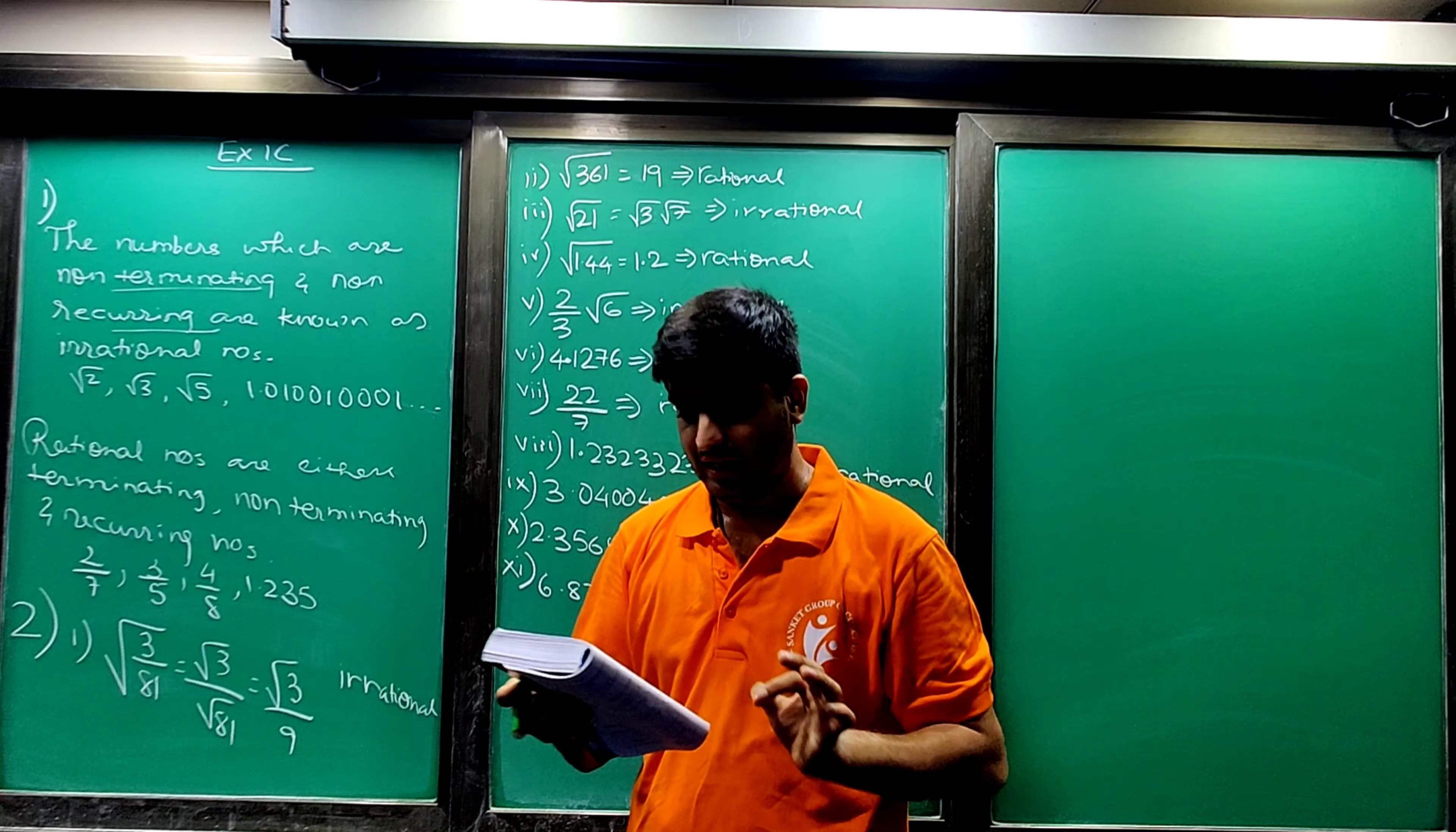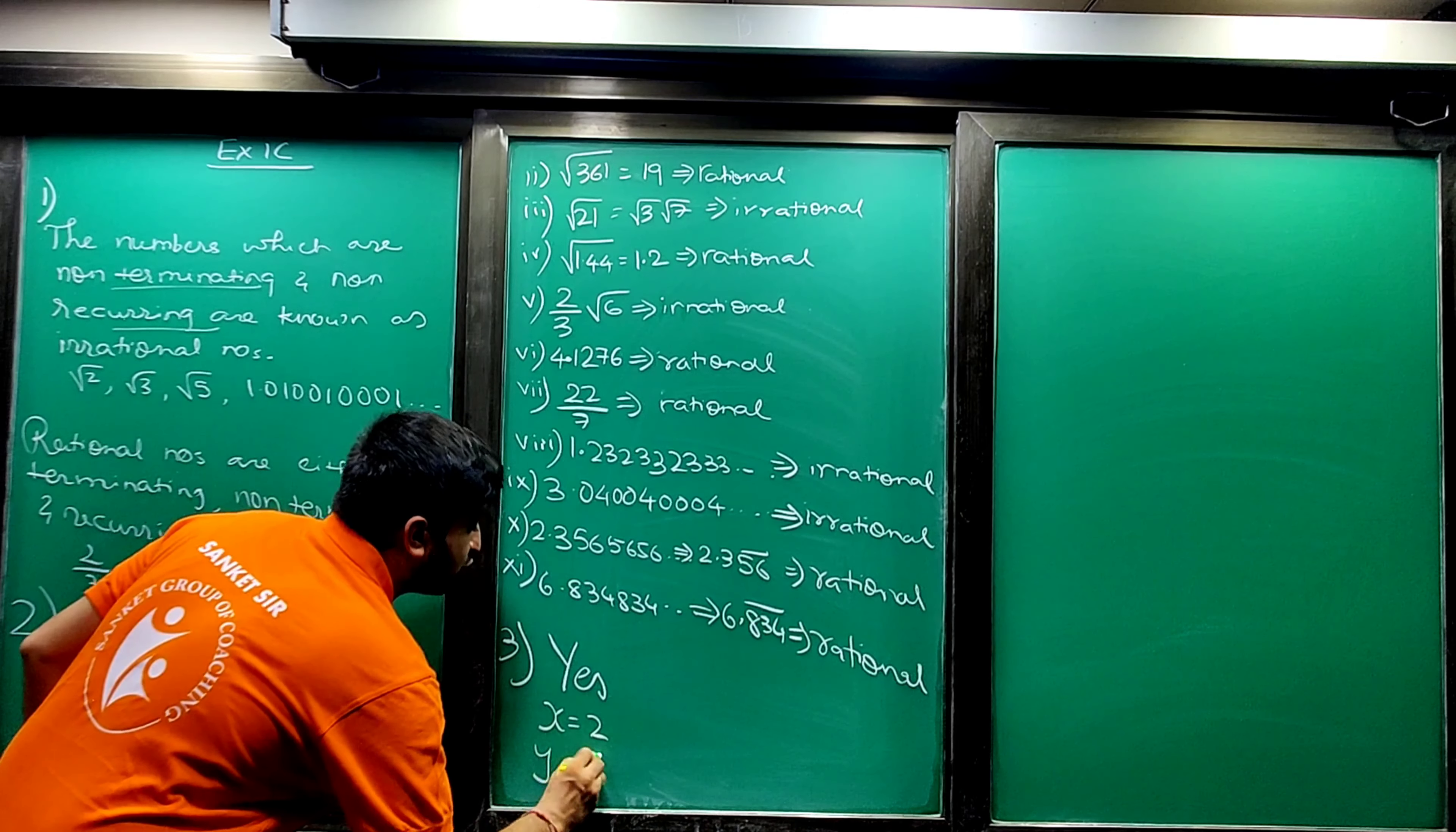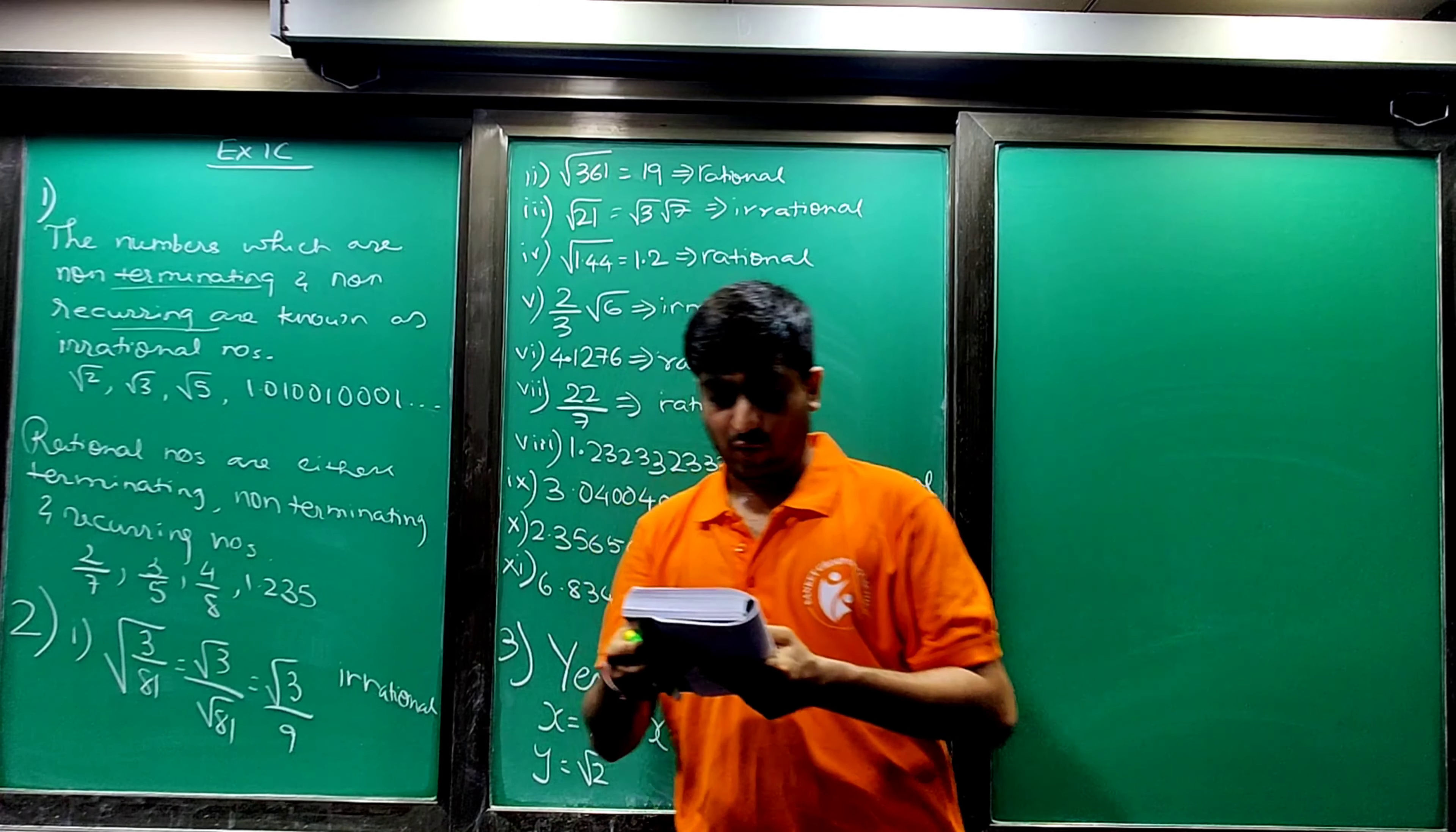So that is the end of major sum number 2. Now next, third: let x be a rational number and y be an irrational number. Is x plus y necessarily an irrational number? Yes, answer is yes. Give an example in support of your answer. So let x equals to 2, which is a rational number, and y is equal to root 2, which is an irrational number. Now what you are asked, x plus y, so 2 plus root 2. This is irrational. Addition will be irrational, and hence it is always necessary that it will be irrational number.